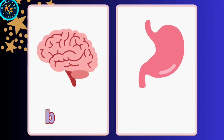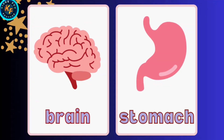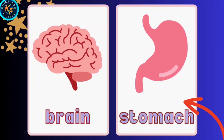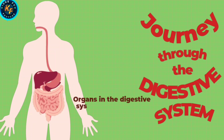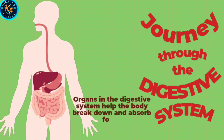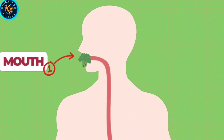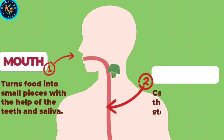This is Brain. This is Stomach. Journey Through the Digestive System: Organs in the digestive system help the body break down and absorb food. The mouth turns food into small pieces with the help of teeth and saliva.